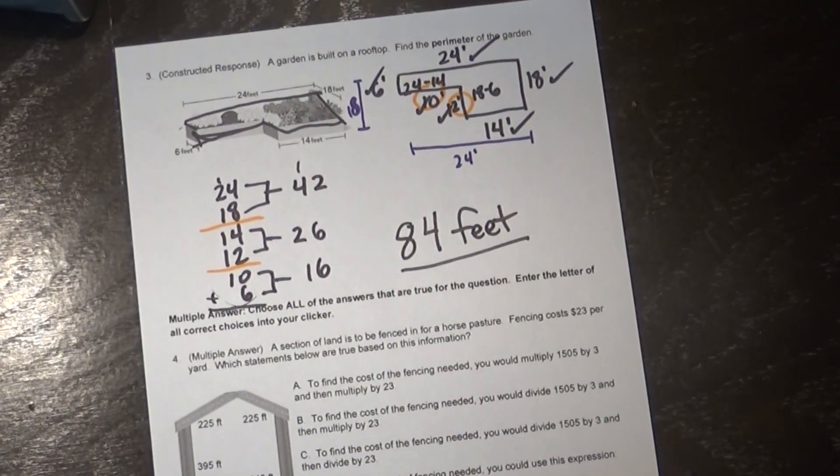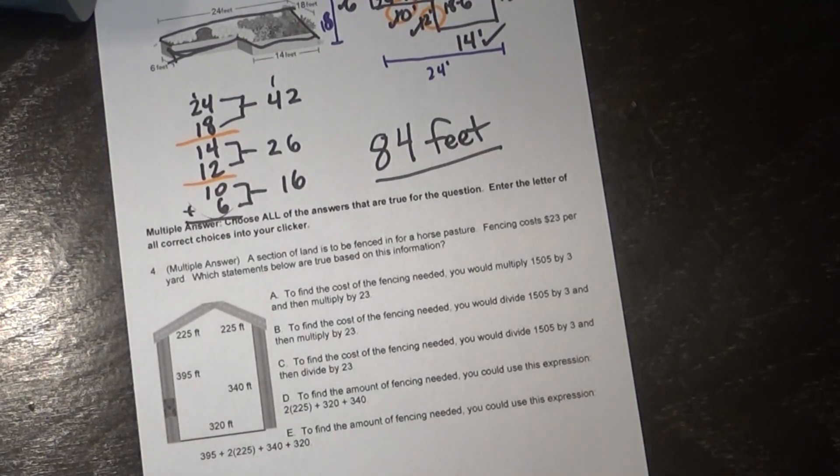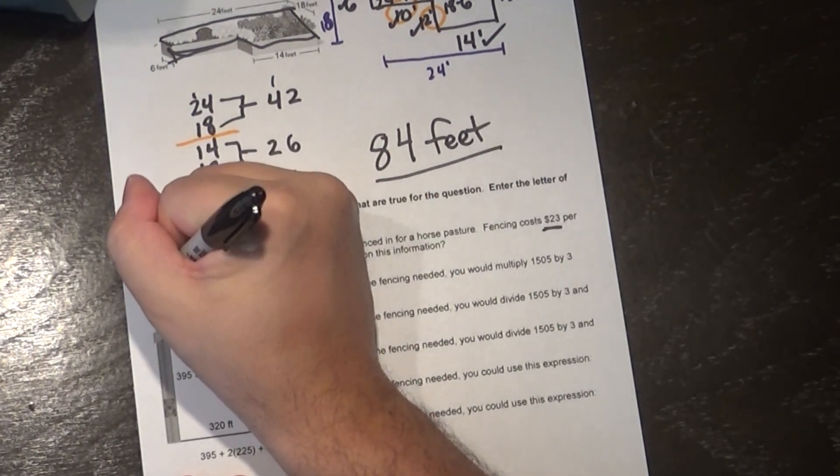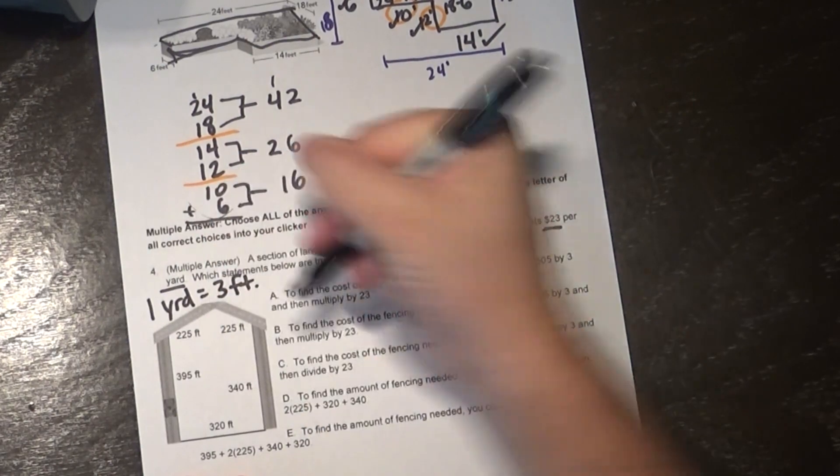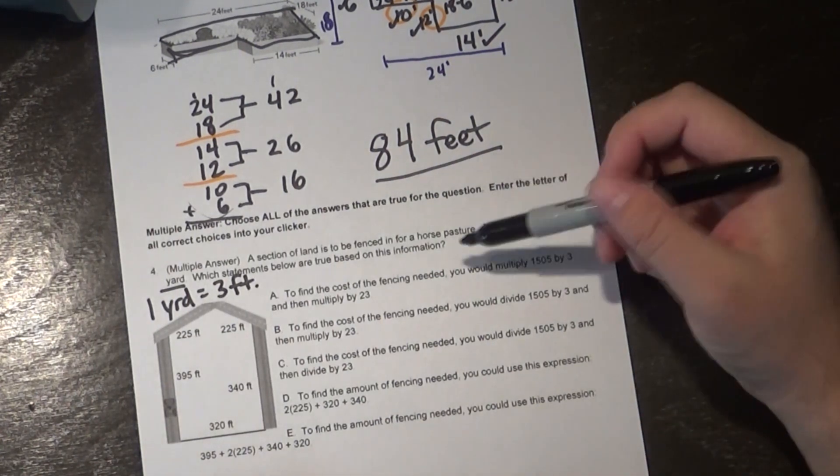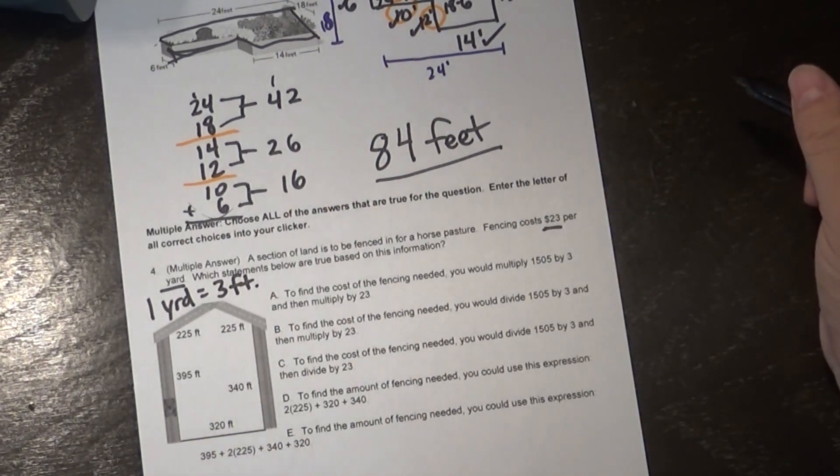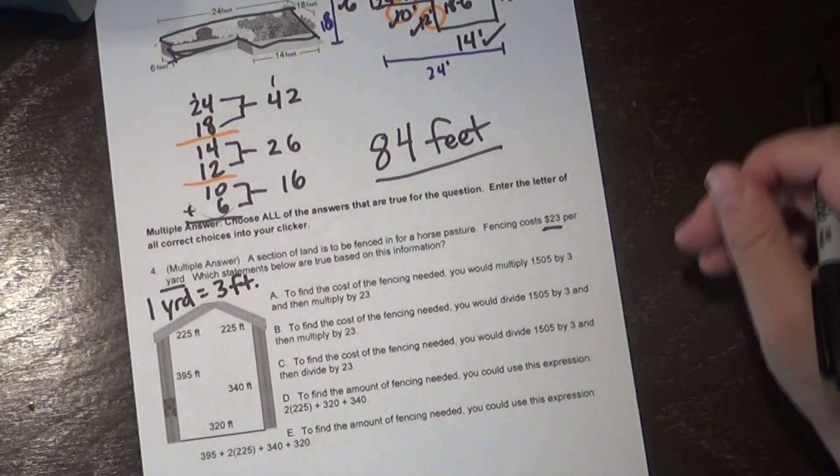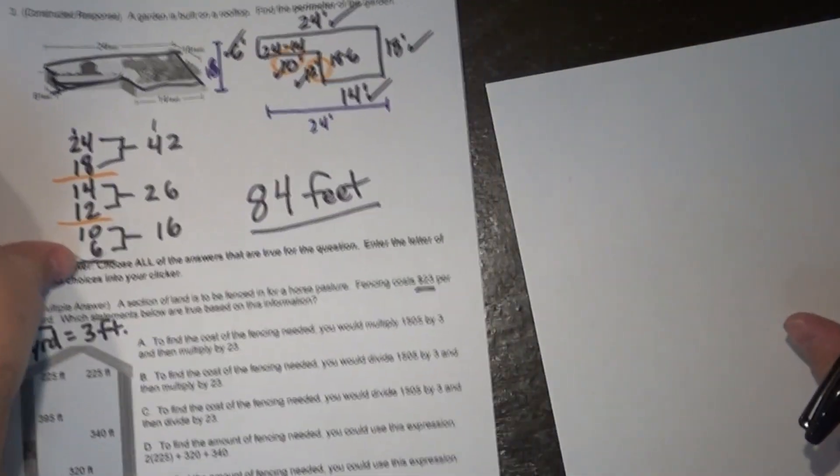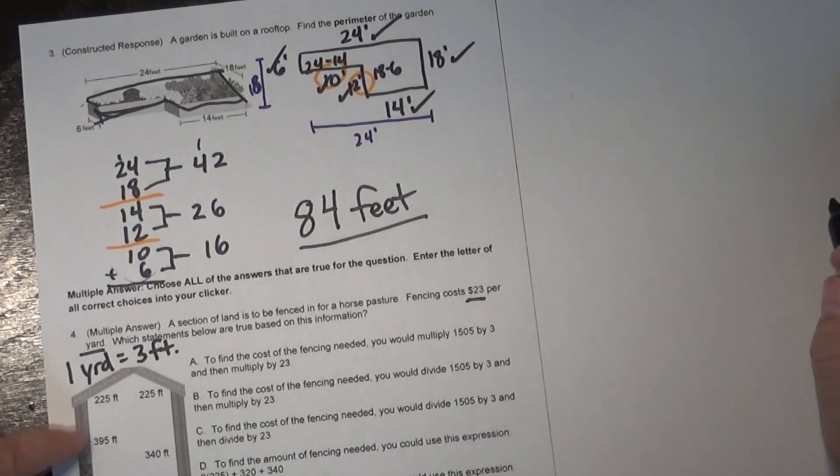So number four is here. A section of land is used to be fenced in for a horse pasture. Fencing costs $23 per yard. Which statements below are true based on this information. Alright, so a couple key things here. First it's $23 per yard. I know that one yard equals three feet. I'm going to write that right on my paper right next to that problem because that's probably going to come in handy later on. As I look at my options here letter A says to find the cost of the fencing needed you would multiply 1,505 by three and then multiply by 23. Now I know what you're thinking, you're thinking what? That doesn't make any sense. What they did is they tried to figure out the perimeter. So I'm going to pull out another sheet of paper here and move this over. Now everything's in view and this is looking good.